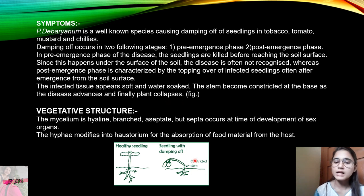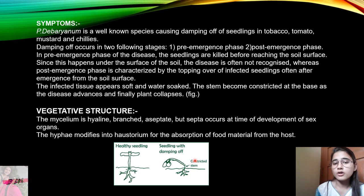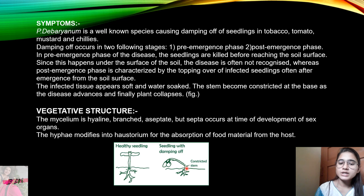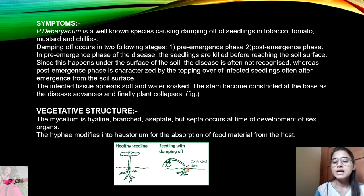As shown in the diagram, the infected tissue is soft and water-soaked. The effect of the fungus is that it infects the tissue and the stem of the plant slowly becomes constricted from the base — meaning it becomes succulent — and after some time the seedling falls down. This is what we call damping off of seedlings.